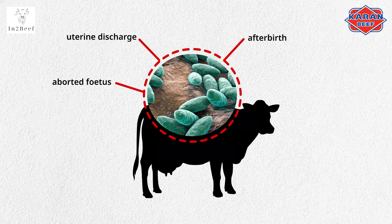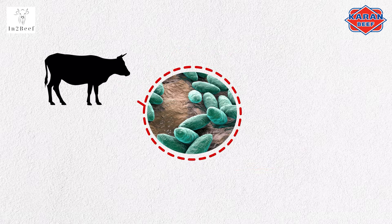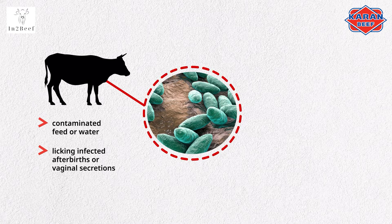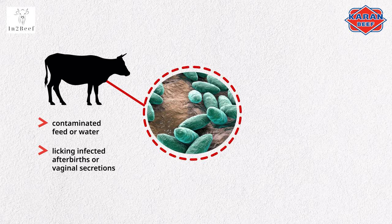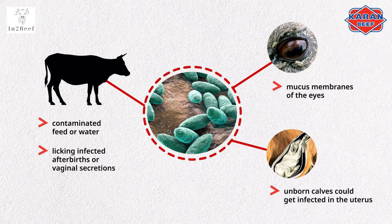The infected cow can also excrete the bacteria through her milk throughout the entire lactation period. Other cattle may become infected by eating contaminated feed or water and by licking infected afterbirths or vaginal secretions after the infected animals have calved or aborted. The infection can also spread through the mucous membranes of the eyes, or unborn calves could get infected in the uterus. Infected calves can still be born normally but will be permanently infected after birth. If female, these heifers will continue to spread the disease when they calf, but they will test negatively until they have calved for the first time.